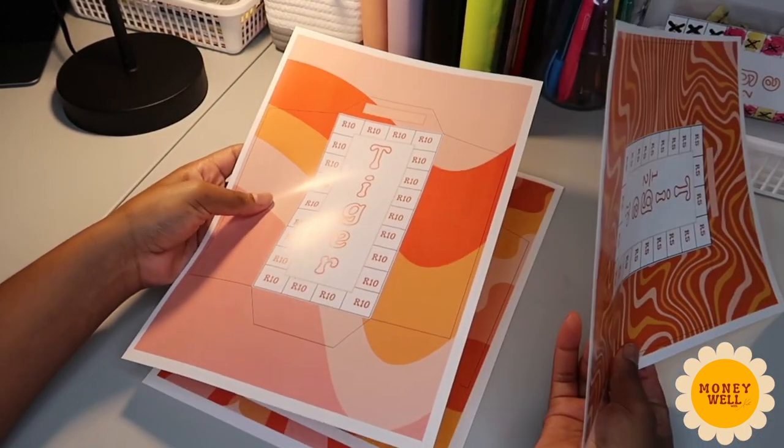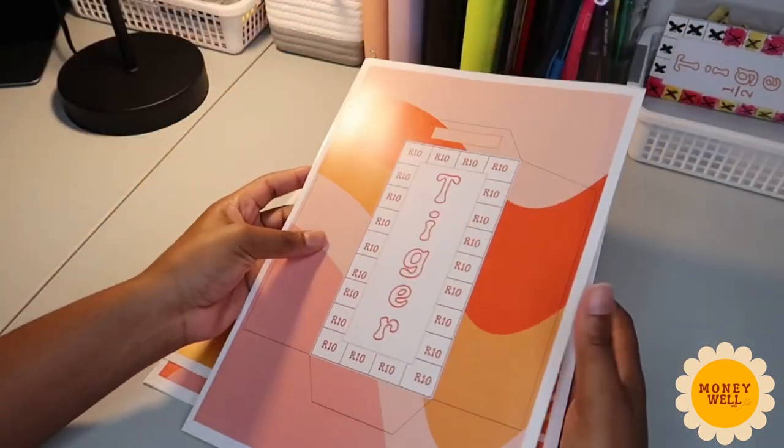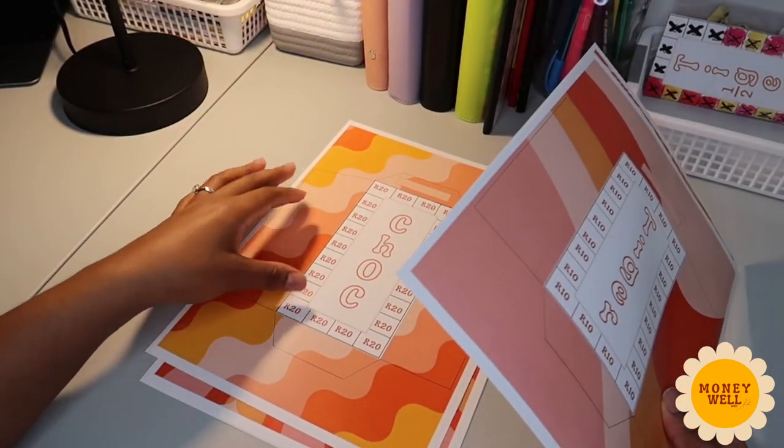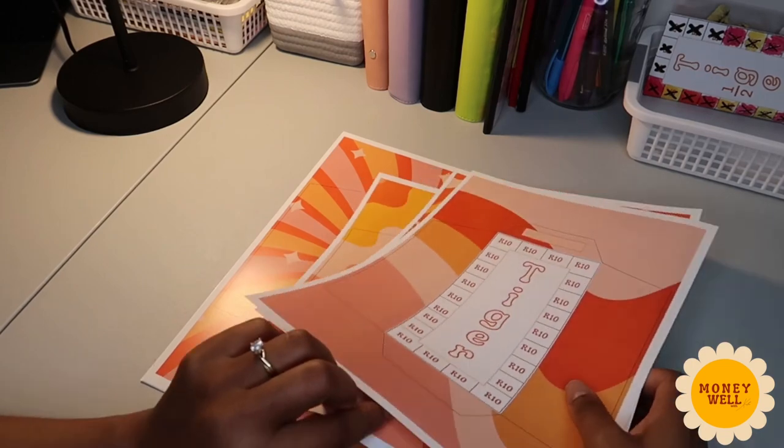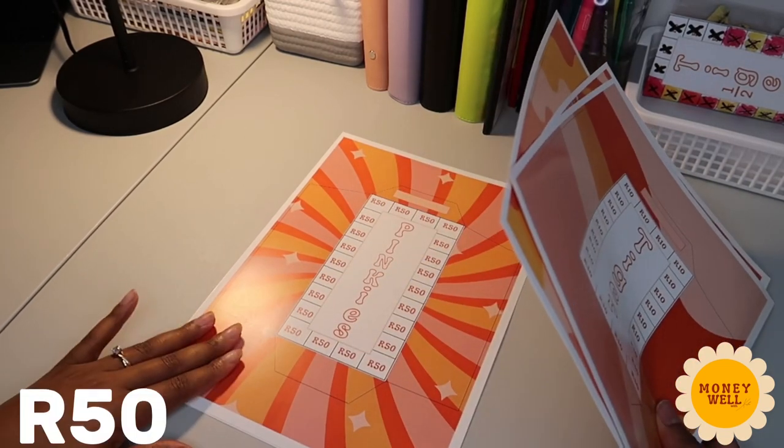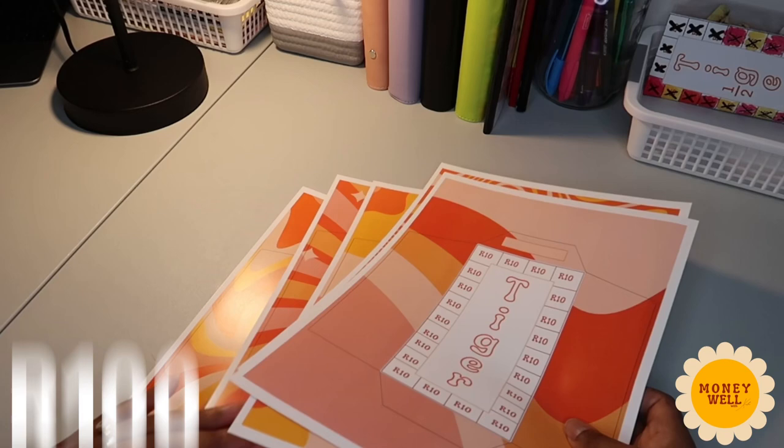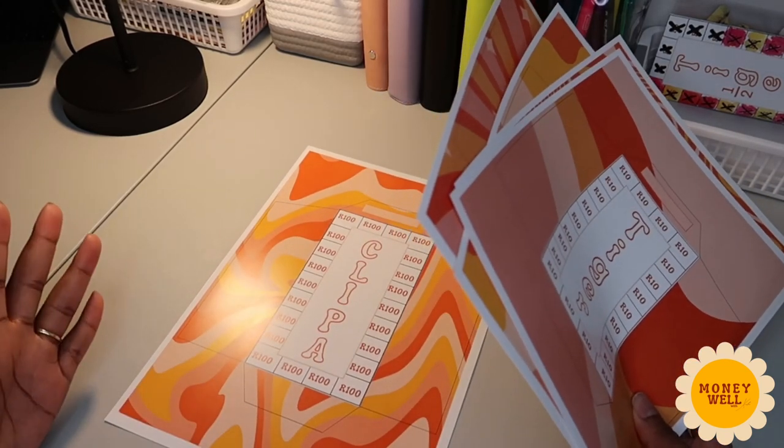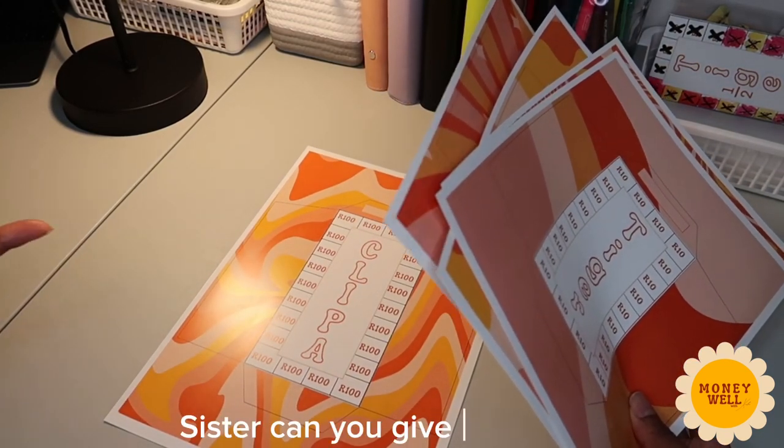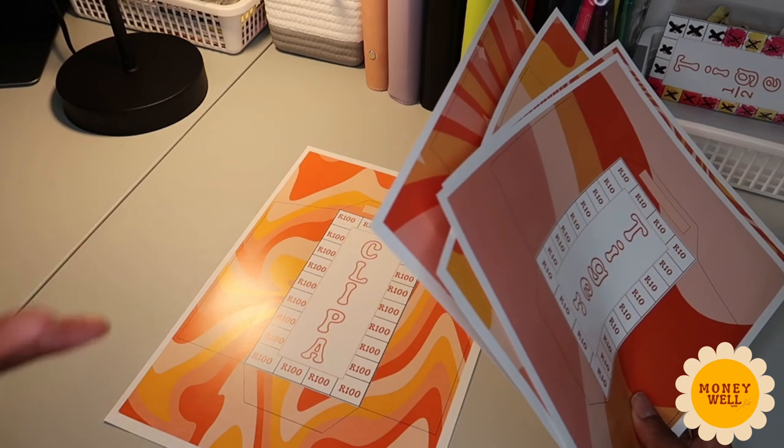Chalk is 20 rand, pinkies is 50 rand, and kipper is 100 rand. So if you hear someone saying sister I'm going to have tiger, then you'll know they mean five rand.